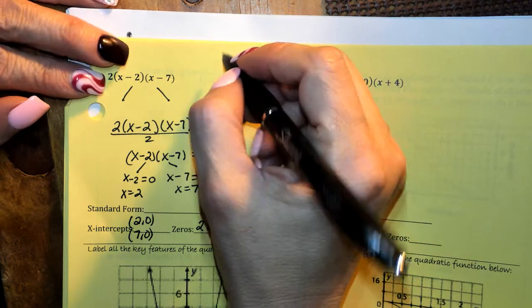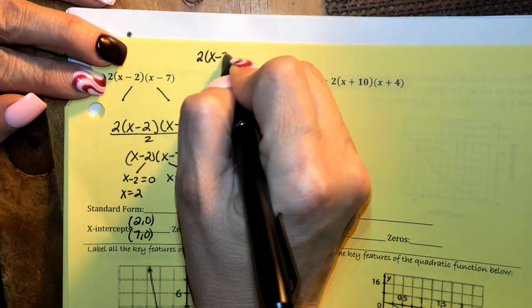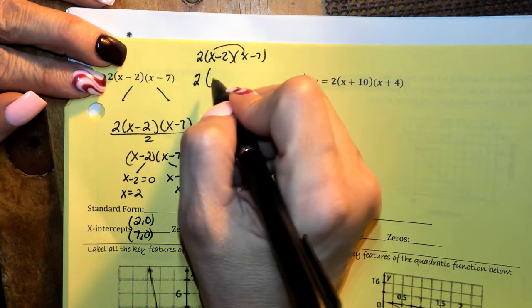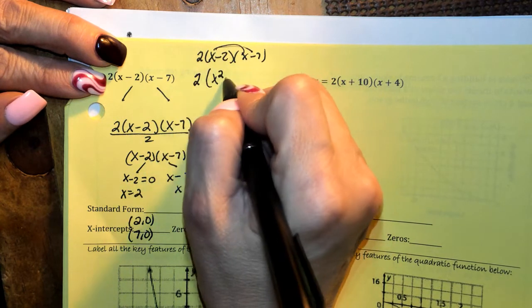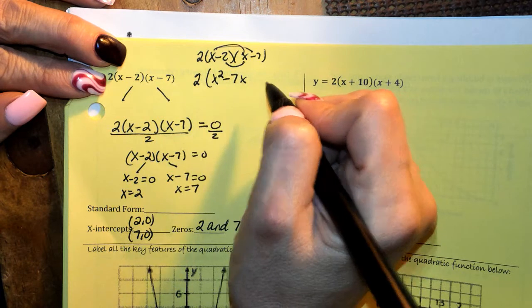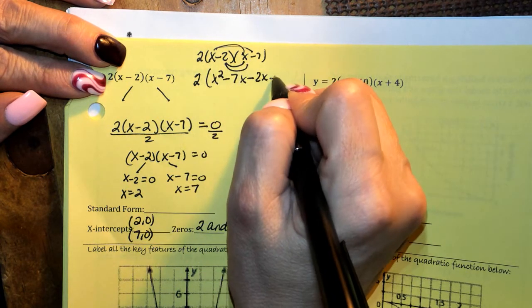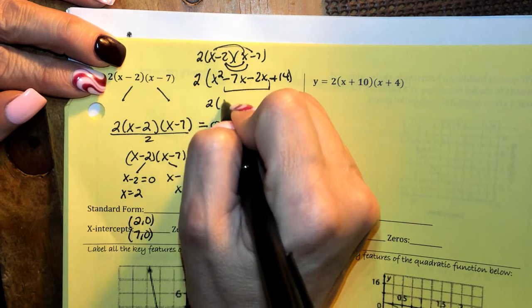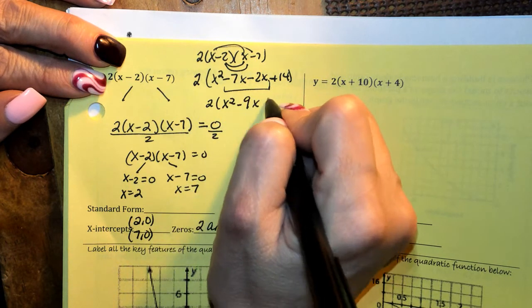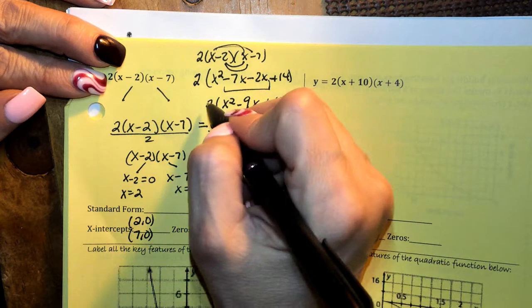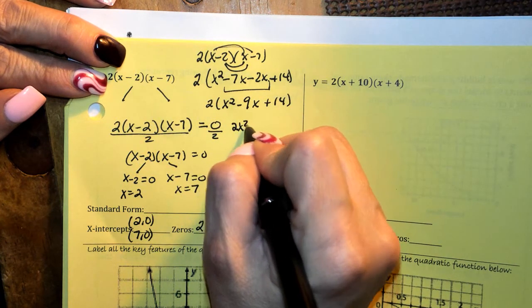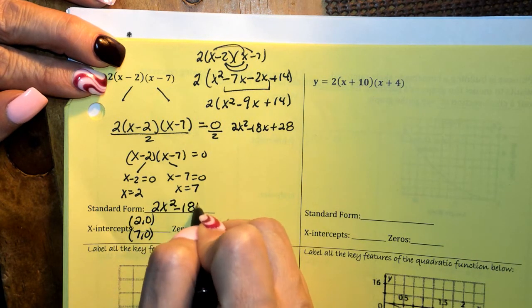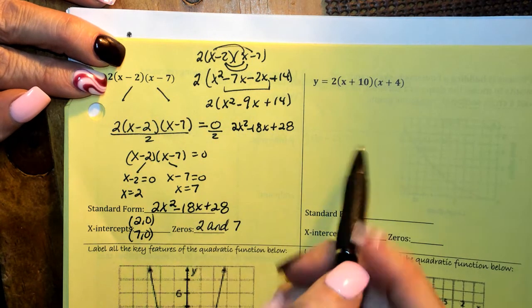Standard form, we're going to have to do double distributing. So we're going to do 2 times x minus 2 times x minus 7, x times x. Remember, I'm going to keep that 2 out front to the very end. That'll be x squared minus 7x. Underneath, negative 2 times x will be negative 2x. Negative 2 times negative 7 will be positive 14. In the middle, put those together. So 2 times x squared minus 9x plus 14. Now multiply everything by 2. 2x squared minus 18x plus 28. So 2x squared minus 18x plus 28. That one works the same.